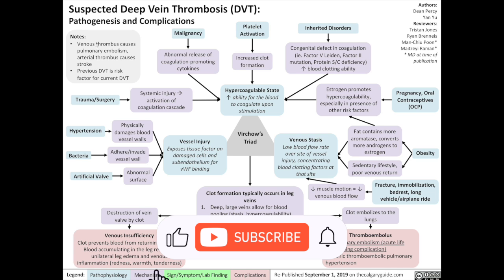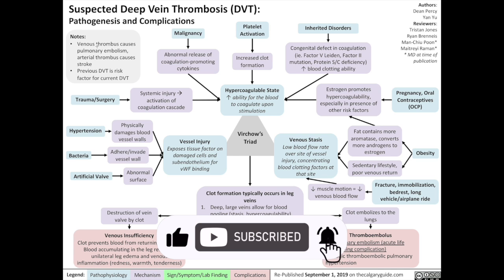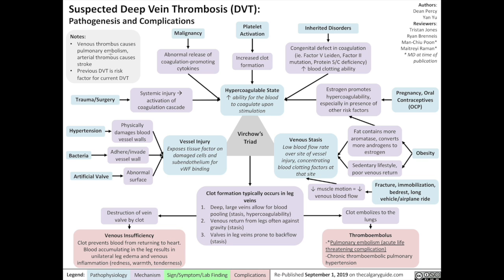First we should note that venous thrombosis is not a stroke. Venous thrombosis can cause pulmonary emboli; it's the arterial thrombi that cause stroke. Now on to Virchow's Triad — it consists of three factors that lead to clotting of blood in an abnormal way.